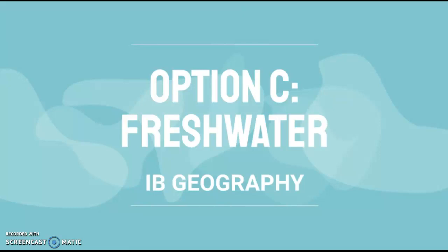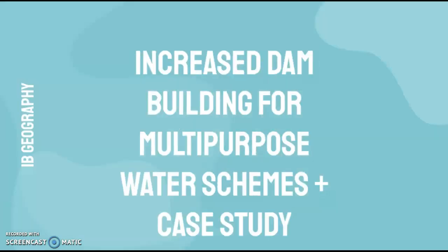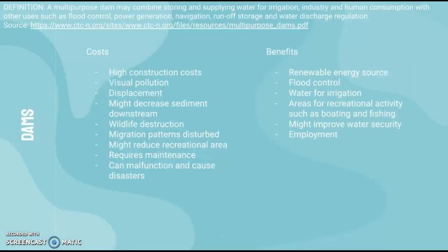Option C: Fresh Water for iGCSE Geography. This is the syllabus point on increase in dam building for multi-purpose water schemes and a case study. A multi-purpose dam may combine storing and supplying water for irrigation, industry, and human consumption with other uses such as flood control, power generation, navigation, runoff storage, and water discharge regulation.